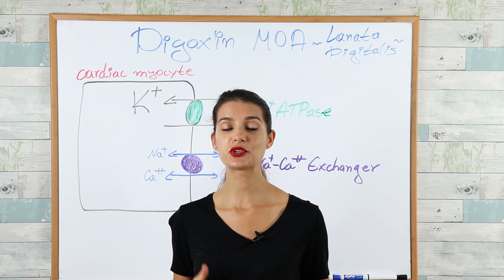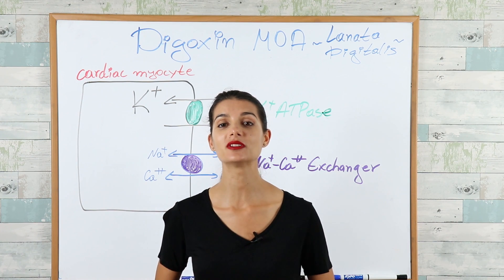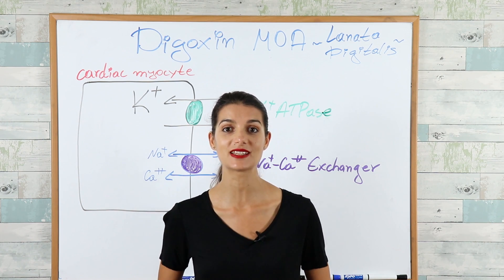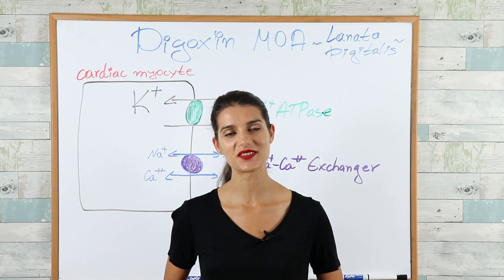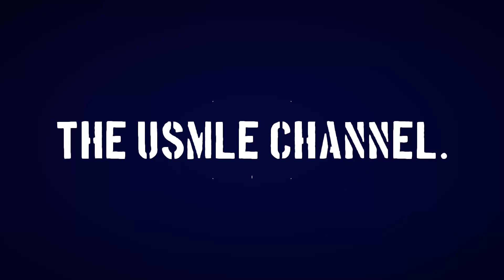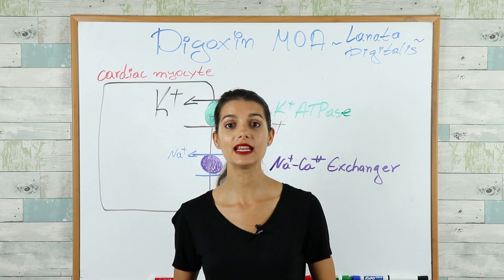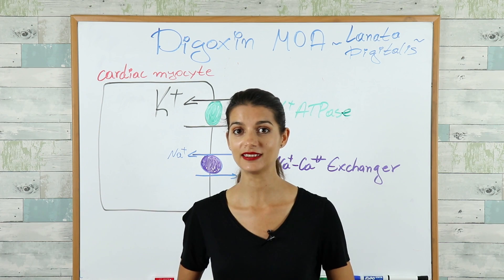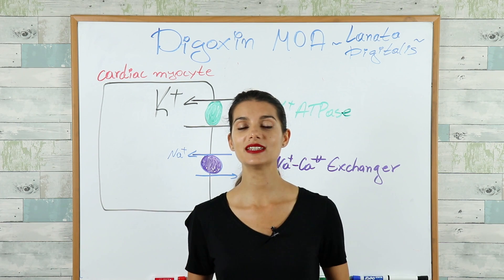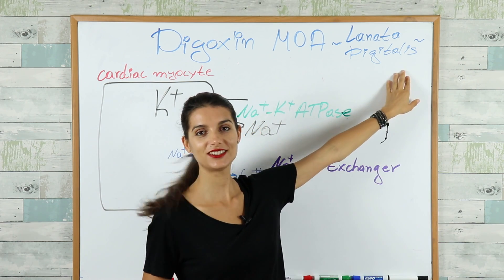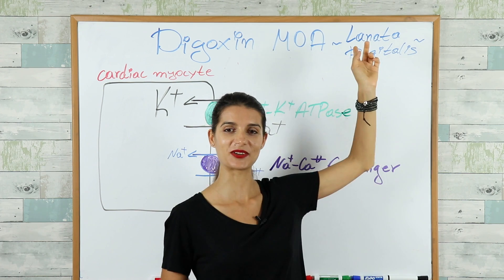Hey everyone and welcome to our short video on the high-yield digoxin mechanism of action. Did you know that digoxin is actually extracted from the leaves of a plant? And the name of the plant is Lanata digitalis — now the name makes sense, right?